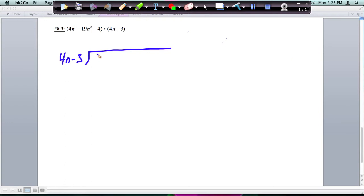So I'm going to go ahead and write first the 4n cubed, then minus 19n squared, and then we said we didn't have an n term, so I'm just going to put 0n. That's the same thing as 0. I'm just holding the place value, then minus 4.